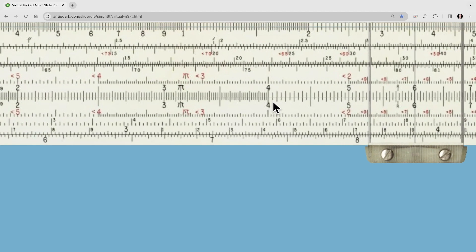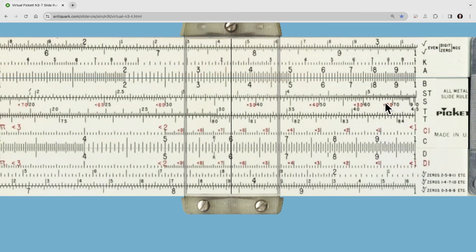We'll go ahead and make that a little larger. So here's the S scale, and we're going to read 30, 35, 36.9. So now we have the sine of angle B, it's 36.9.